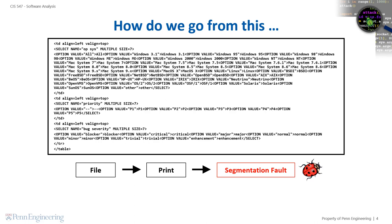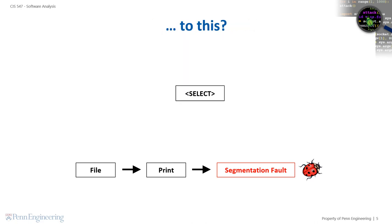Let's look at a concrete bug report in the Mozilla bug database. Consider this HTML page — loading it using a certain version of Mozilla's web browser and printing it causes a segmentation fault. Somewhere in this HTML input is something that makes the browser fail. If we were the developers of the Mozilla web browser that crashes on this input, we would want the simplest HTML input that still causes the crash. So how do we go from this large input to a simple input — a mere select tag that still causes the crash?